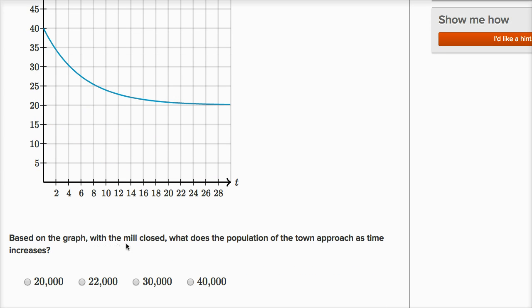Based on the graph, with the mill closed, what does the population of the town approach as time increases? Well, we just said it. As time increases, it looks like it's coming close to, it's approaching 20,000.